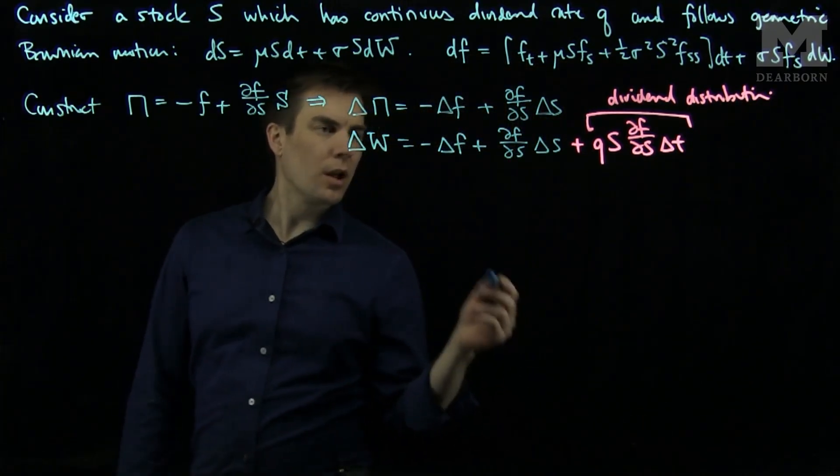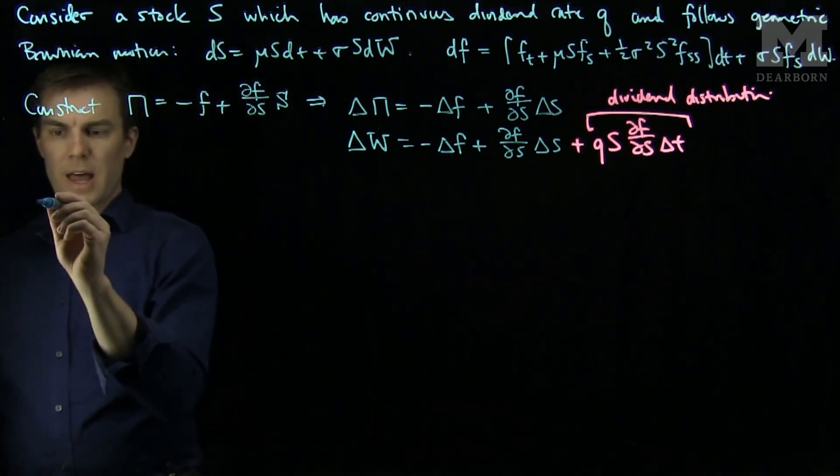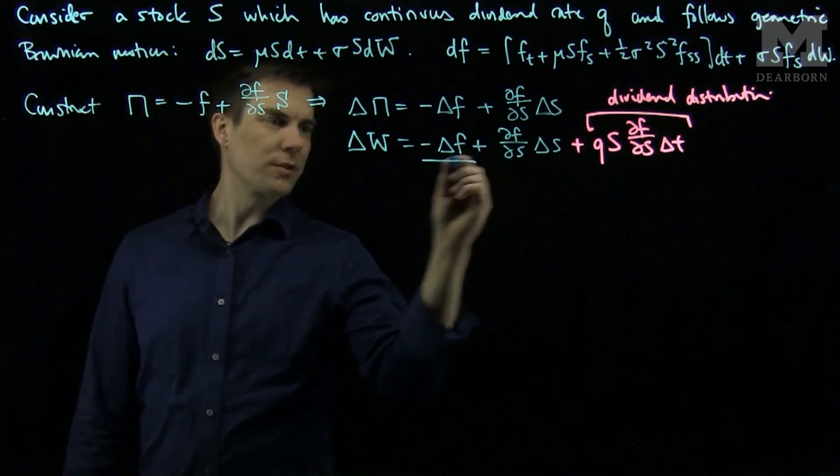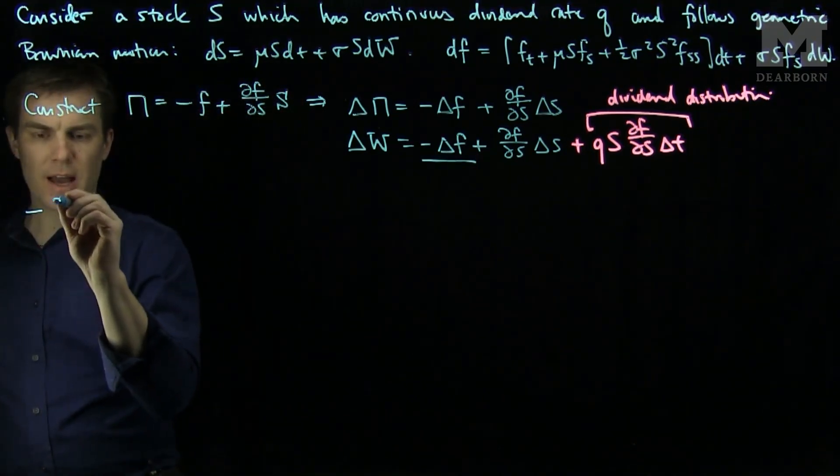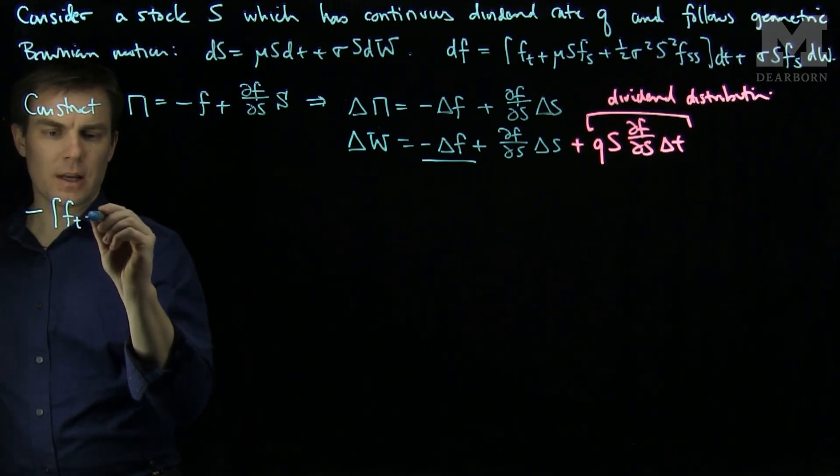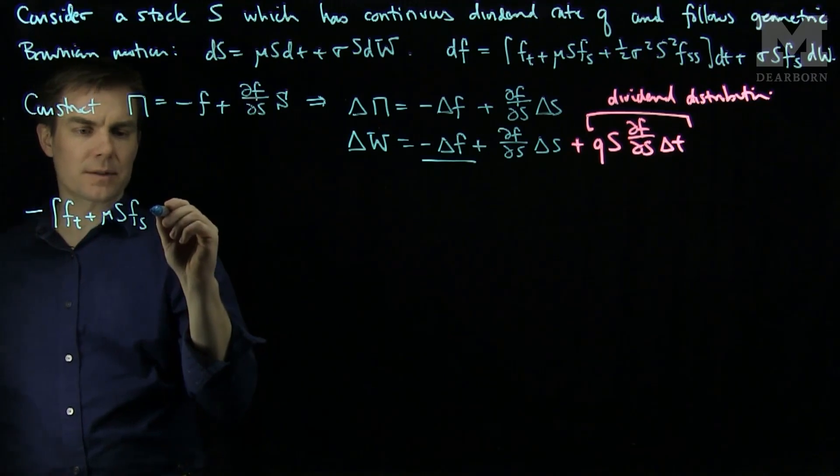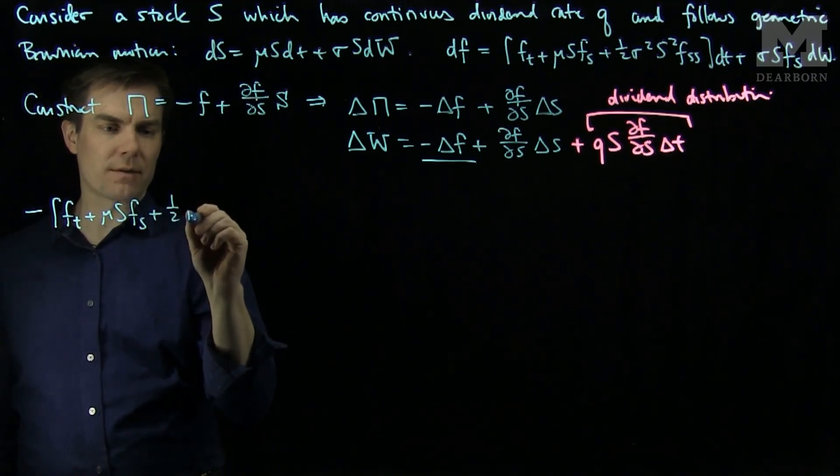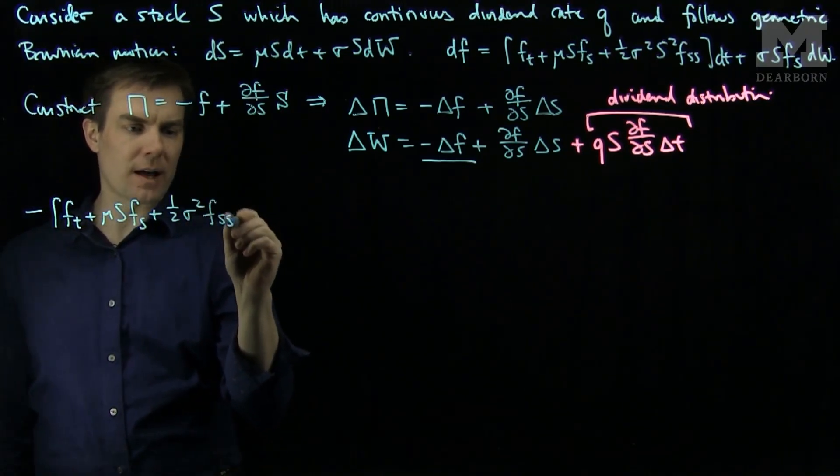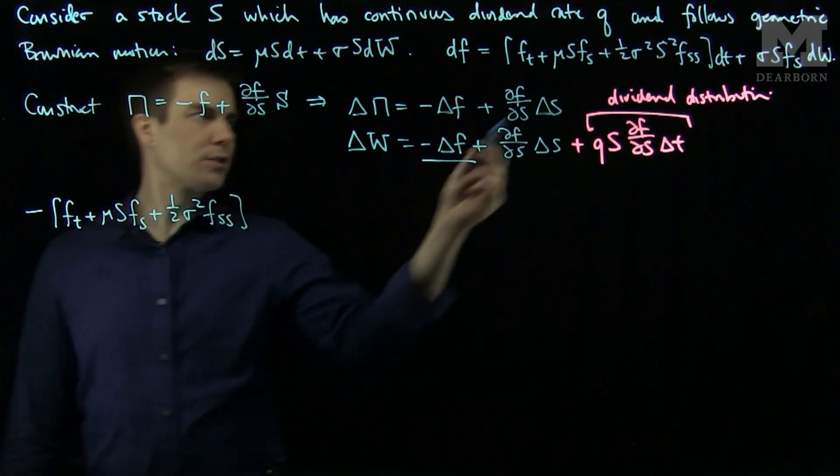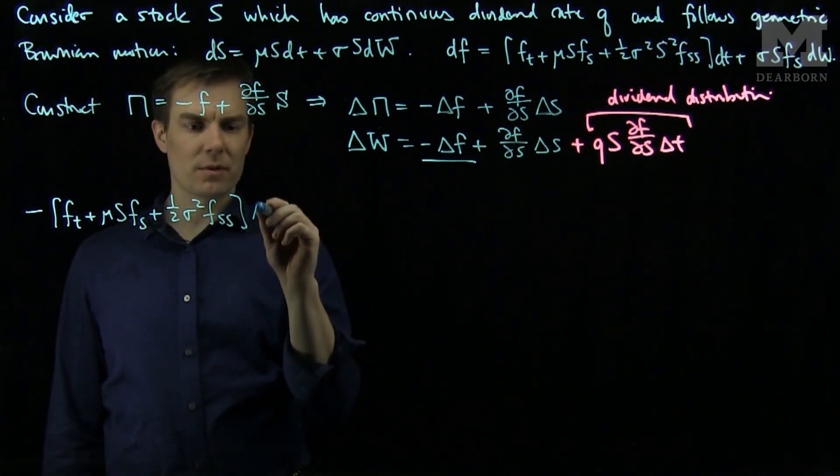So if we plug these values in, negative delta F, we'll compute this first, is negative Ft plus mu S Fs plus one half sigma squared Fss. And these terms are my delta t terms for the derivative.